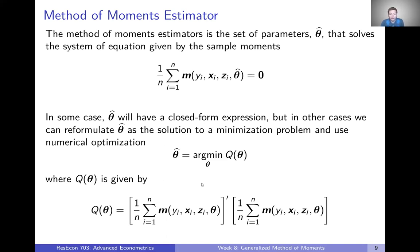In that case, we can formally define theta hat, our method of moments estimator, as the set of parameters that minimize this objective function, which we're going to call Q. This Q, which is a function of theta, is given by this expression here.